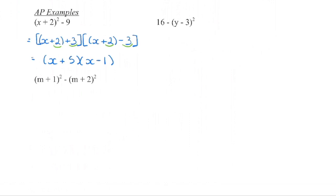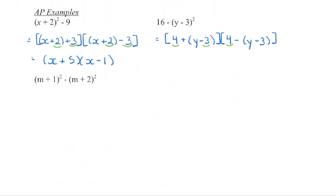The same approach applies to the next AP example — we are subtracting two terms, both of which are perfect squares. Set up the conjugates. Square rooting cancels the squared, leaving y minus 3 in each bracket. Are there like terms to simplify? We have 4 minus 3, which is 1. On the other side, distribute the negative sign in, so this becomes negative y, and negative times negative gives positive 3, so positive 3 plus 4 gives 7.